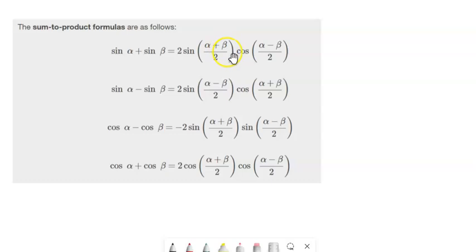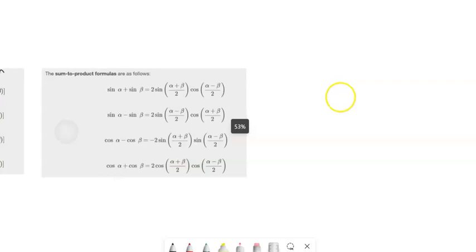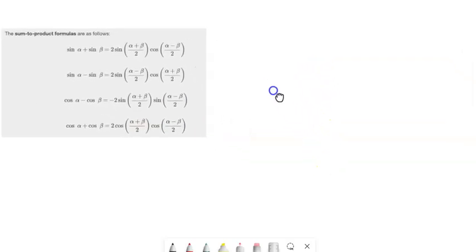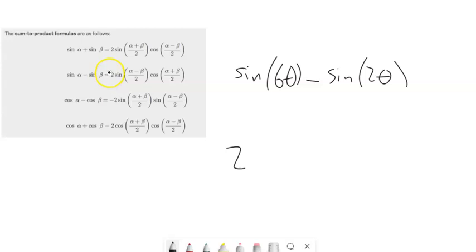Two times sine something times cosine something. So for example, if I wanted to do that problem that I just did. I've got sine minus sine. So here it is right here. Sine minus sine. So it's going to be 2 times sine of something. And that something is them subtracted divided by 2. Multiplied by cosine of them adding together divided by 2.